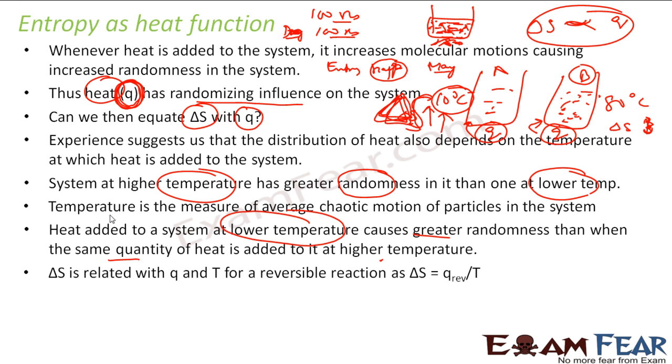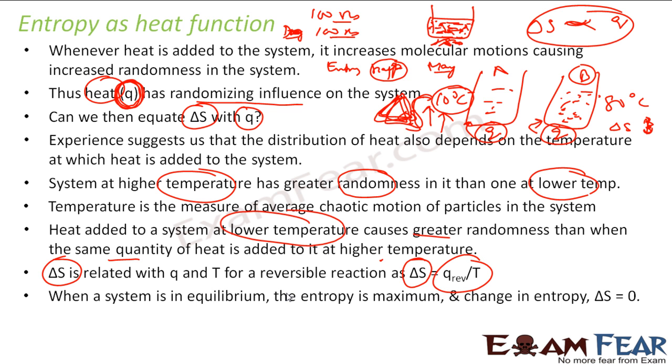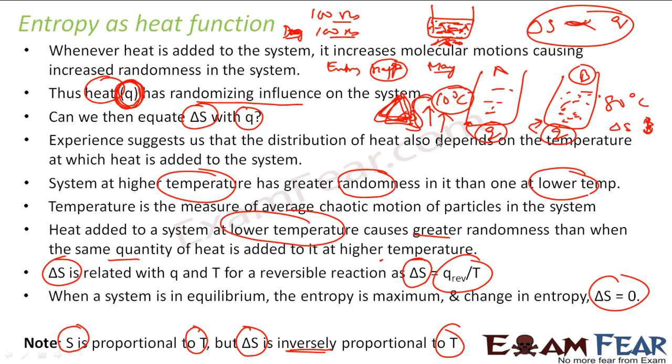If you see the formula we got from the experiments: the change in entropy is Q by T. When the system is at equilibrium, delta S is zero. The thing I want you to note is that entropy is proportional to T, but change in entropy is inversely proportional to T. System with higher temperature will have higher entropy, but if there are two systems, one with higher temperature, one with lower temperature, the change in entropy is inversely proportional to T. This system has lower temperature, the change in entropy is more. This system has higher temperature, the change in entropy is less.